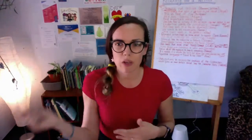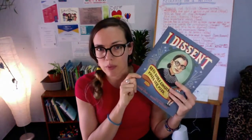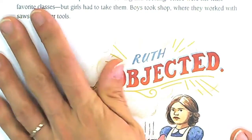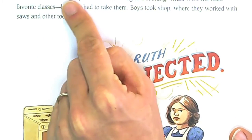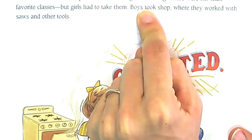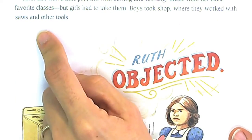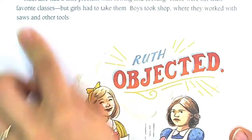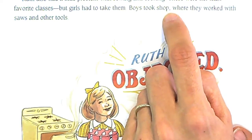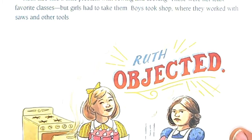Instead of looking at our mentor speeches, I'm going to go back to a story we've read before — 'I Descent' — and show you a few examples of appositives. Here in the book: 'Ruth also had a little problem with sewing and cooking. These were her least favorite classes but girls had to take them. Boys took shop where they worked with saws and other tools.' There's an appositive in this section. When we see a comma, that is a big clue that we're seeing an appositive, because appositives are announced with commas.